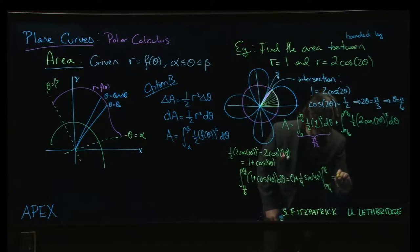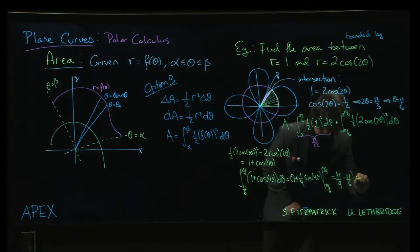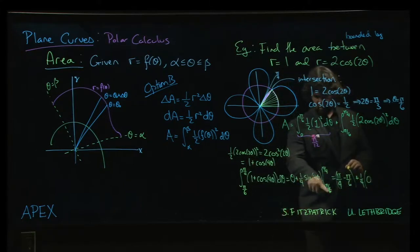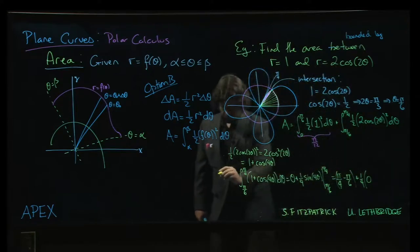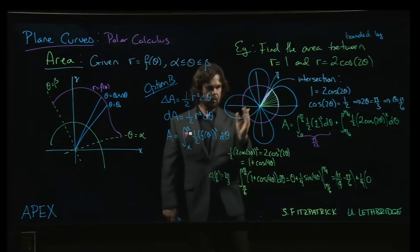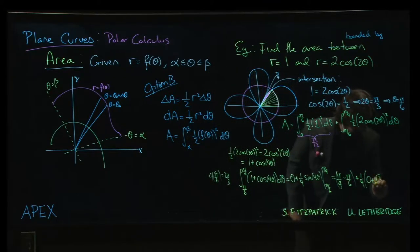So that is pi over 6 minus... Oh, sorry. Got those mixed up, didn't I? That should be our 4. That should be our 6. Pi over 4 minus pi over 6. The first part. And then 1 over 4. Sine of... Let's see. So 4 times pi over 4 is pi. Sine of pi is 0. 4 times pi over 6. That's 2 pi. 2 pi over 3. It's in the second quadrant. Sine of 2 pi over 3 is root 3 over 2.